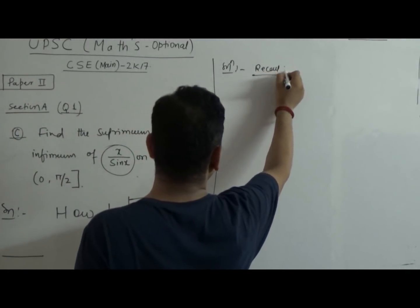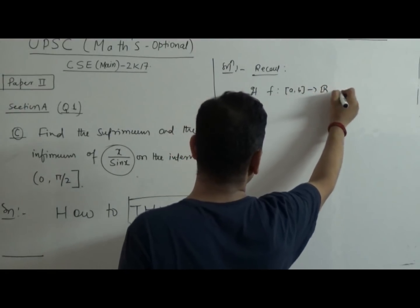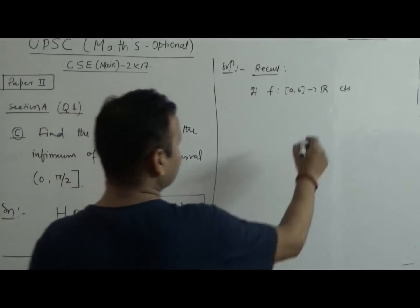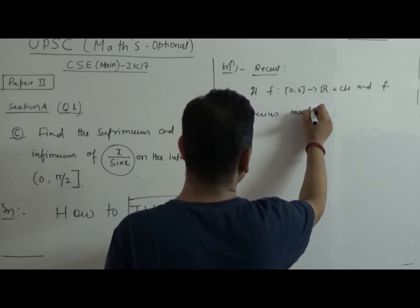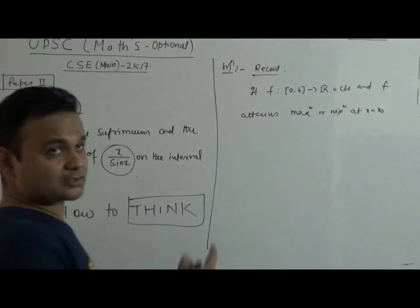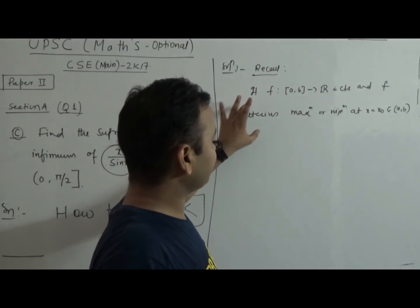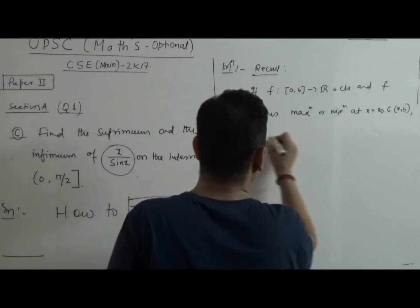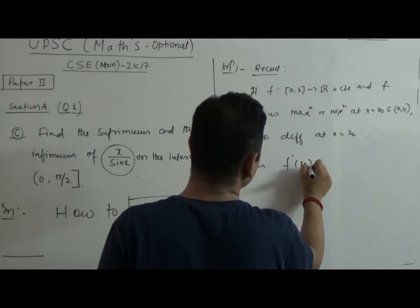First, recall this theorem: if f maps from [a,b] to ℝ and is continuous, and f attains maximum or minimum at a point x equal to x₀ which lies in the interior of [a,b], and f is differentiable at x equal to x₀, then the derivative at x₀ must be zero.